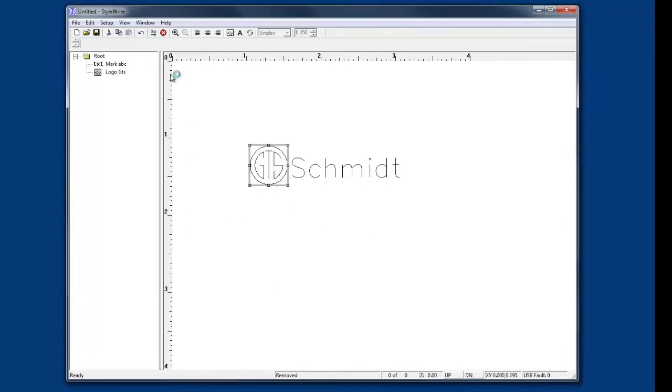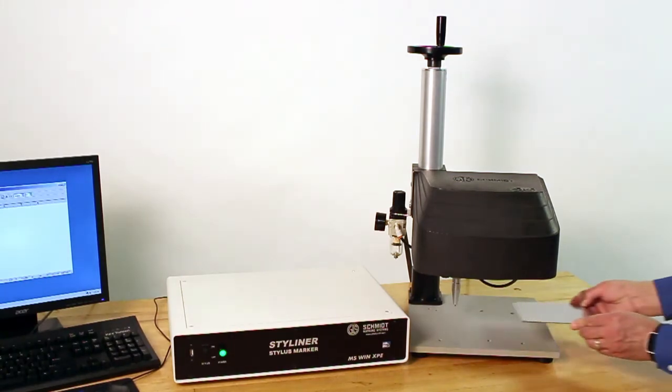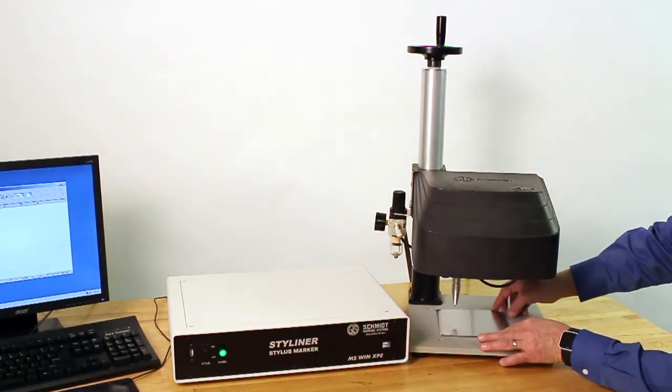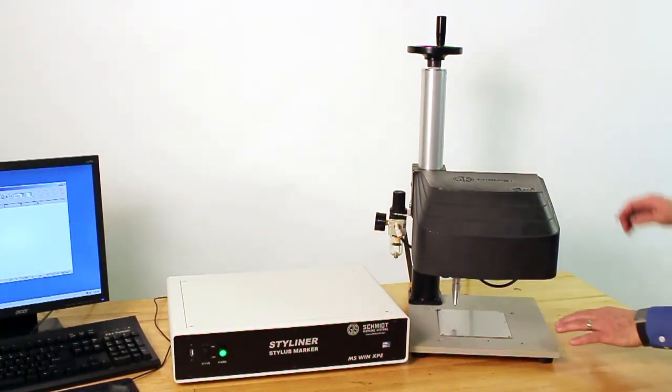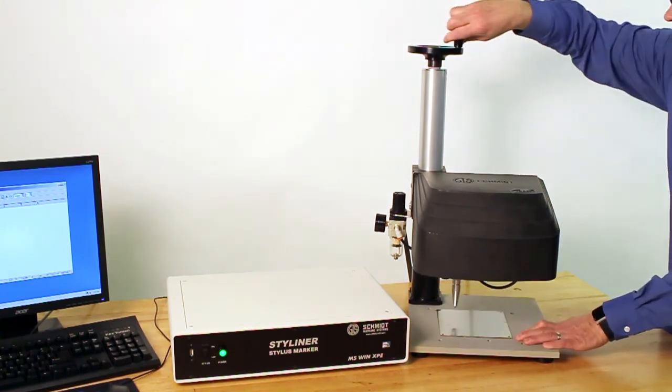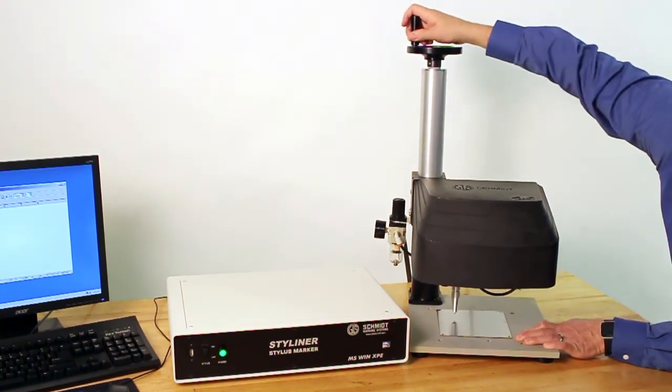Once you have created your mark, place your part into the marking area on the StyleLiner marking machine and turn the manual crank handle to adjust the height of the marking head pin directly over your part.